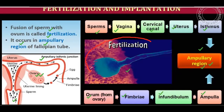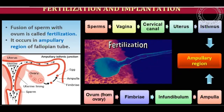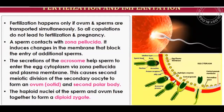In the diagram, the head of the sperm is the only part that penetrates into the ovum and is responsible for fertilization. Fertilization happens only if the ovum and sperm are transported simultaneously. Not all copulations lead to fertilization and pregnancy, but every copulation may potentially lead to fertilization and eventually pregnancy.